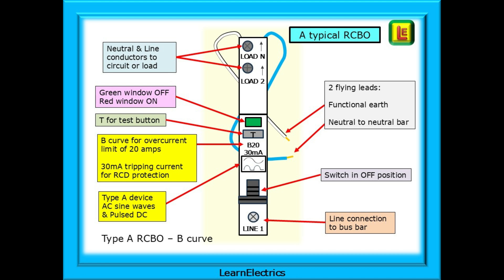Shown here is a Type A RCBO, with fewer and fewer Type AC devices being installed nowadays. Take note of the two yellow boxes on the left. This is a Type A RCBO for residual currents, with a Type B curve for overcurrents.